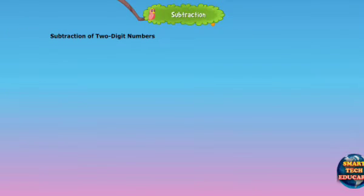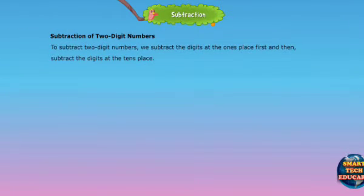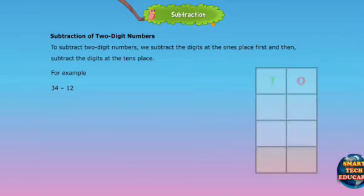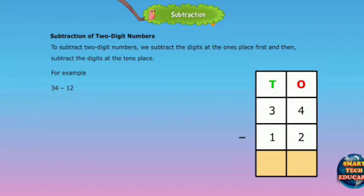Subtraction of two-digit numbers. To subtract two-digit numbers, we subtract the digits at the ones place first, and then subtract the digits at the tens place. For example, 34 minus 12.